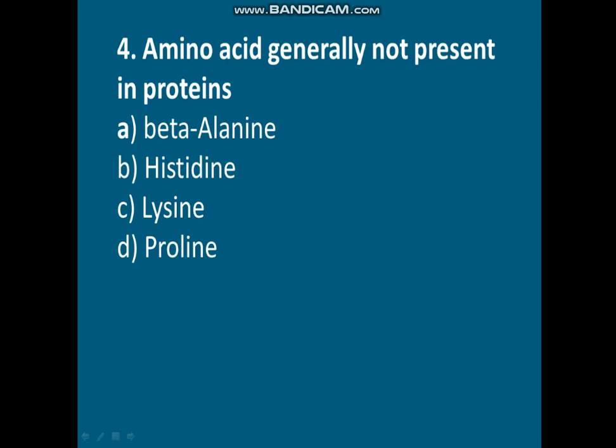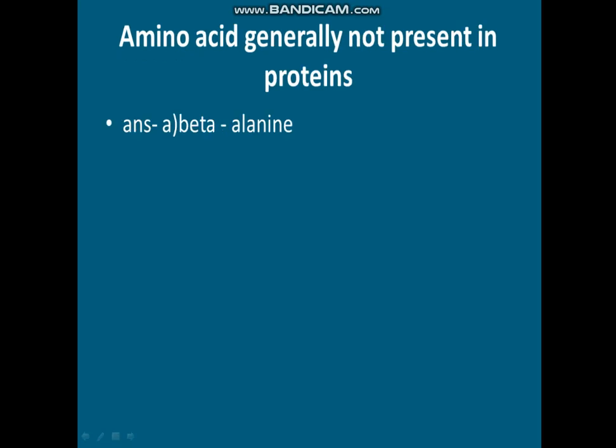Question four: amino acid generally not present in proteins. As we know, amino acids are the building block material of proteins, but certain amino acids are generally not present in proteins. Options are: A) Beta-alanine, B) Histidine, C) Lysine, D) Proline. The correct answer is option A, Beta-alanine.